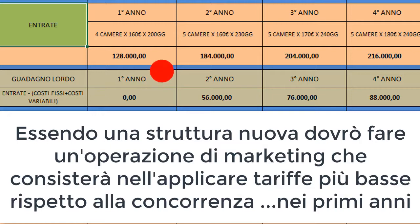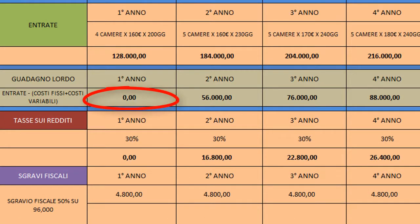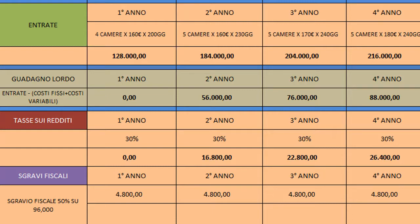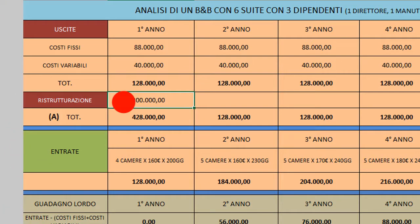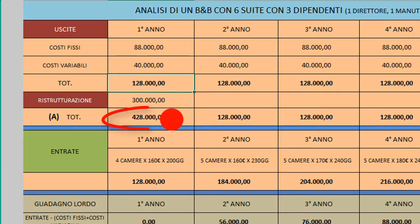Scorrendo sotto avrò un guadagno lordo che il primo anno è zero, perché le uscite sono 128.000 euro e le entrate sono anch'esse 128.000 euro. Però c'è una voce importante: i 300.000 euro del costo della ristrutturazione. Il business plan mi serve proprio a questo: la somma dei 300.000 iniziali e dei 128.000 annui porta a un'uscita totale di 428.000 euro.